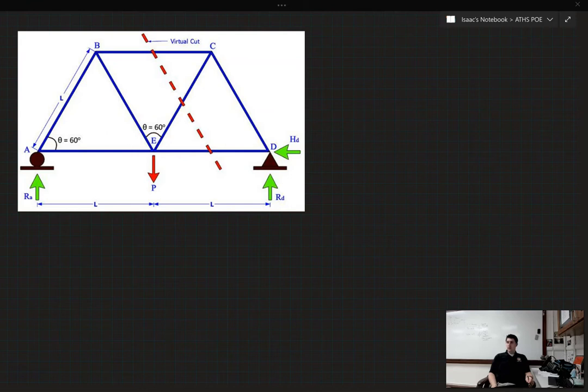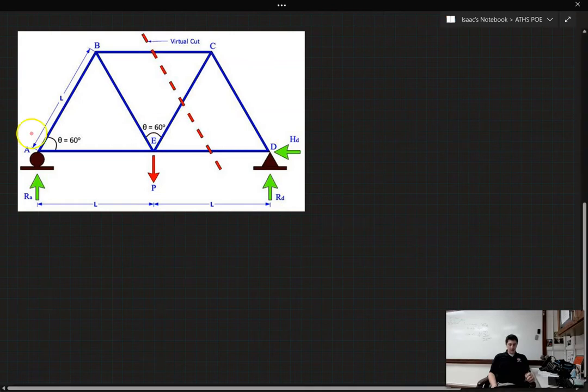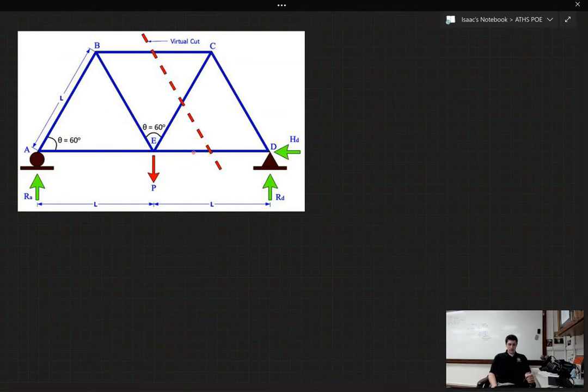So questions one, two, and three we're looking at this truss. Now this truss has a roller on the left side and it has a pin on the right side. It also has joints A, B, C, D, and E, which you can see on the corners there.